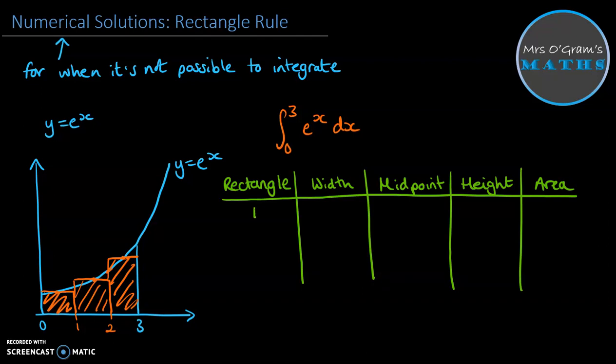So our rectangle number 1, the width of that is 1. The midpoint is 0.5. The height of our rectangle here is the y value at 0.5, so it's whatever the curve would be when x is 0.5. So if we do e to the 0.5, we will get that height. So e to the 0.5, that's 1.649. And if we're working out the area of the rectangle, we do the width multiplied by the height. Well, the width is just 1, so our area for this one is 1.649.